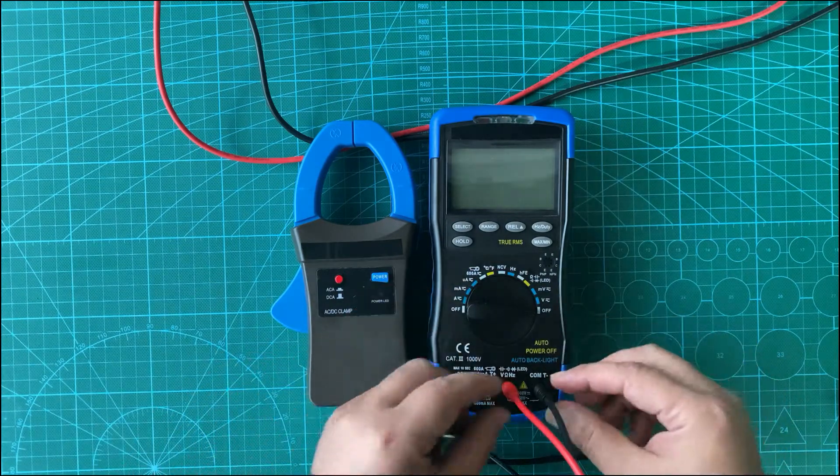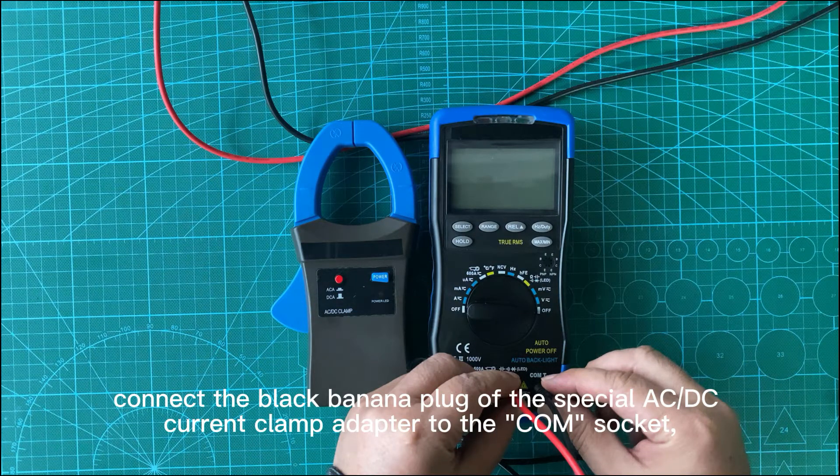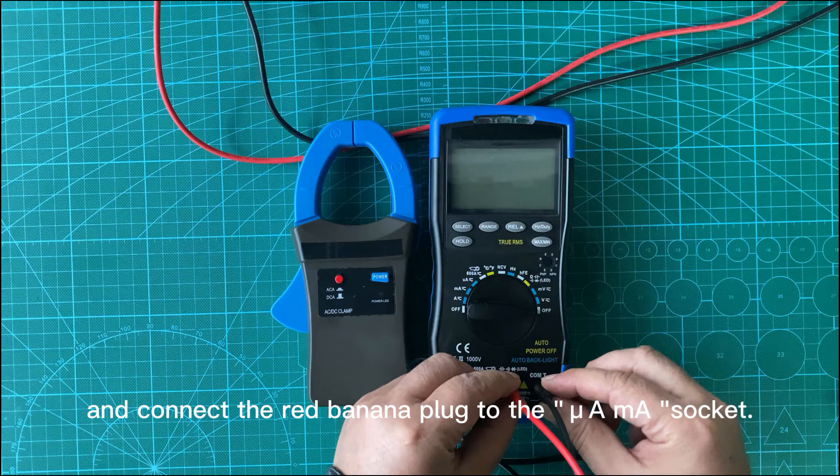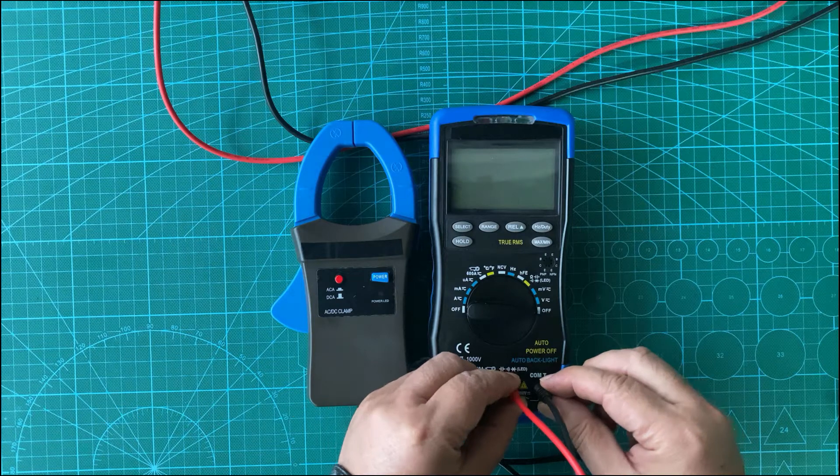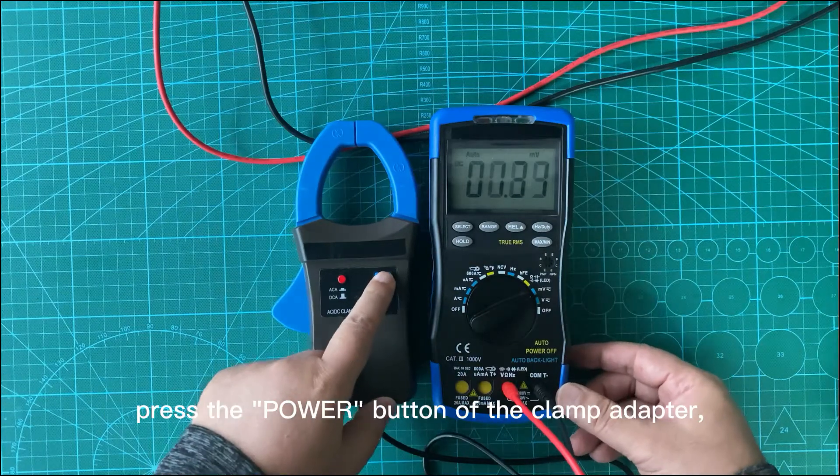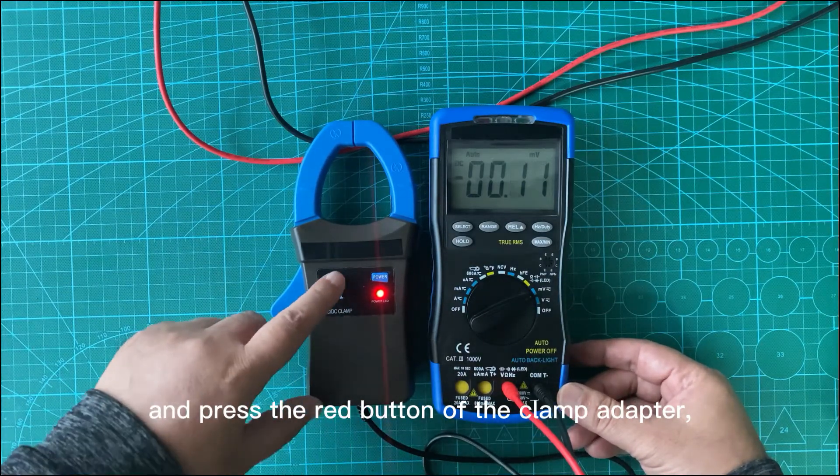AC current measurement. Before measurement, connect the black banana plug of the special AC/DC current clamp adapter to the COM socket and connect the red banana plug to the mV/mA socket. Rotate the gear of the multimeter to the mV position. Press the power button of the clamp adapter and press the red button of the clamp adapter.